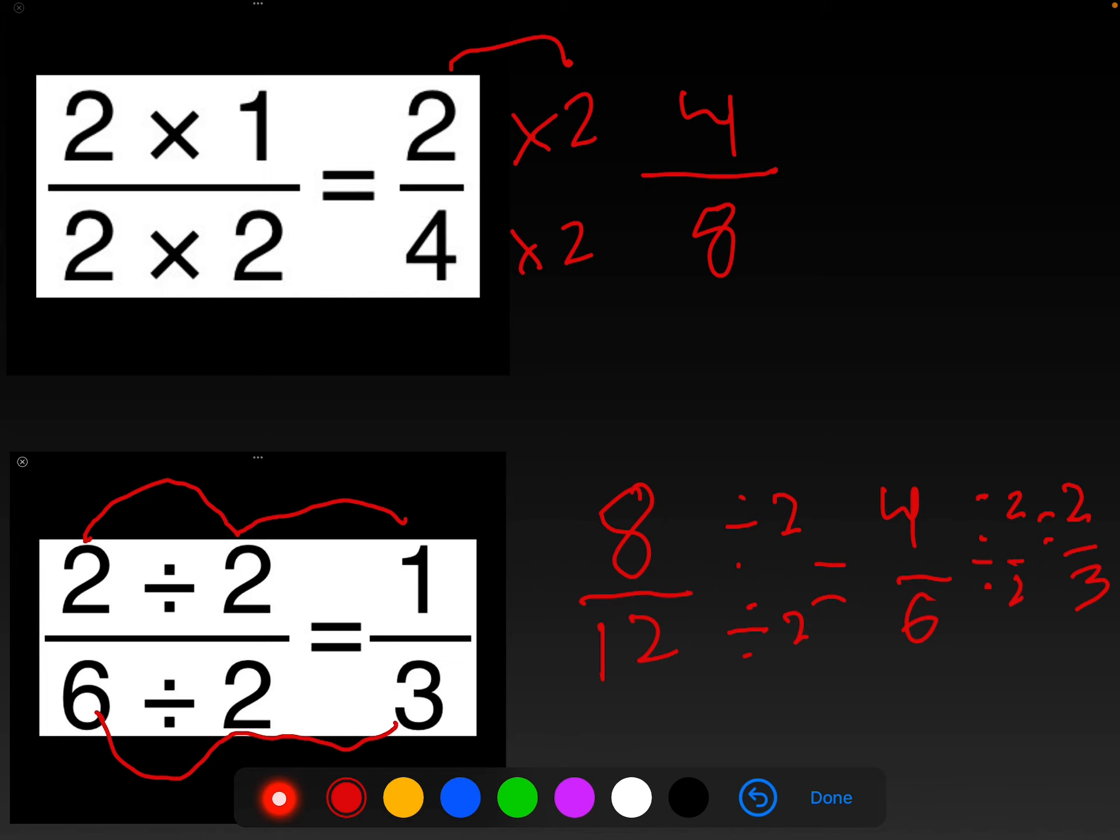So equal fractions here. We have eight-twelfths, four-sixths, and two-thirds. So as long as we know that the top number and the bottom number are divisible by the same number, we can find additional equivalent fractions.